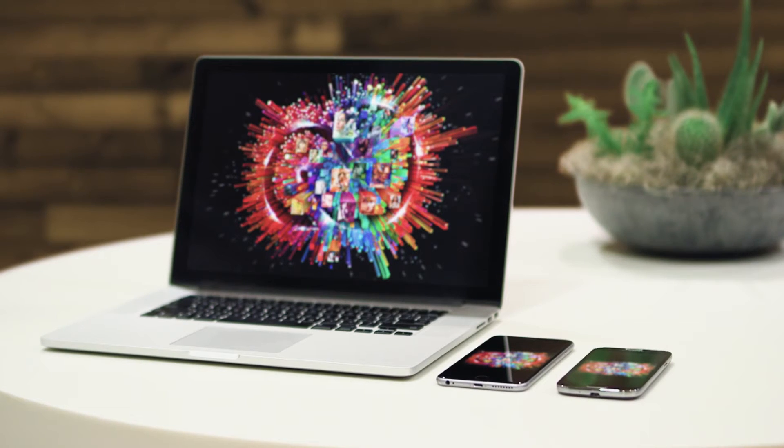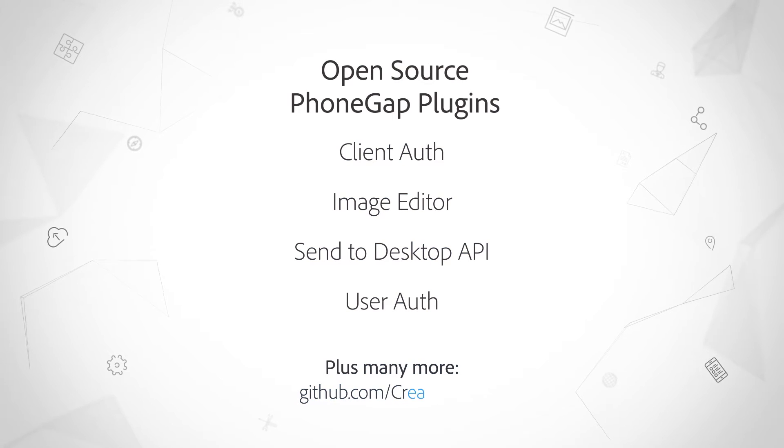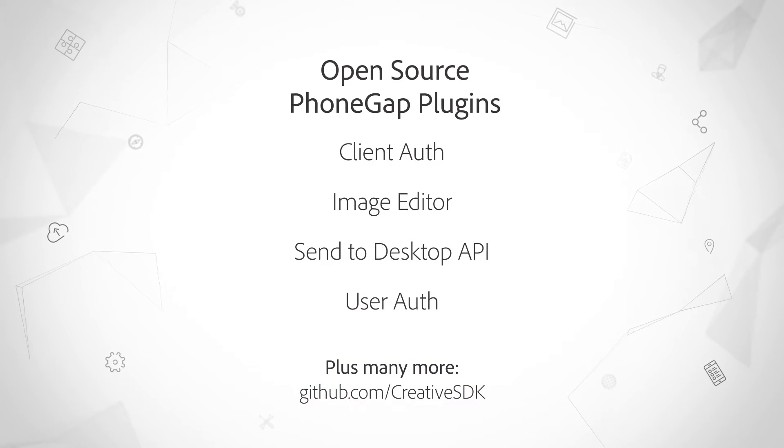Up until now, you could access the Creative SDK on iOS, Android, and web, but there are situations where web developers want to write apps that will deploy on iOS and Android without learning how to code in Objective-C, Swift, or Java, and instead write with technologies that they already know and love, like HTML, CSS, and JavaScript. Now with the Creative SDK's partnership with the Adobe PhoneGap team, we offer plugins that make the Creative SDK accessible to those web developers.